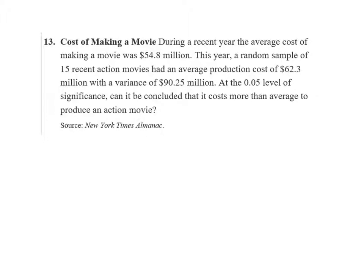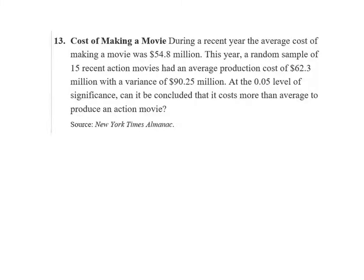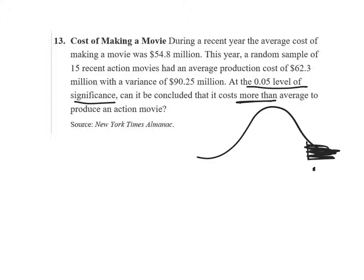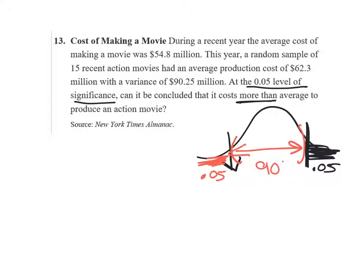We need to figure out what our confidence level is. We are looking at a significance level of 0.05, and since the alternative is 'more than average,' it's a right-tailed test. So there's 0.05 in the right tail, and think of a pretend 0.05 on the left side as well, since confidence intervals are always symmetric. That means the middle is 90%, so we want a 90% confidence level.